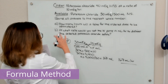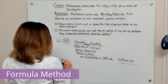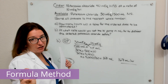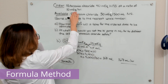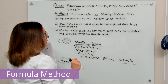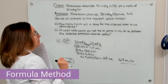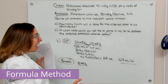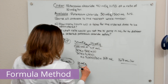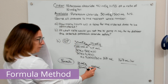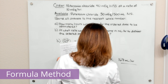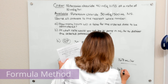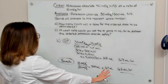Now let's solve part B using the formula method. With the formula method, we have desired over have times the vehicle. We are given a rate of 10 MEQ per hour and want to figure out milliliters per hour — how many milliliters it takes to give the patient 10 MEQ. What we desire is 10 MEQ; what we have is 30 MEQ in 500 mLs of normal saline — that is our vehicle. Doing this math, we end up with 167 milliliters, which is administered over an hour, so our rate is 167 milliliters per hour.